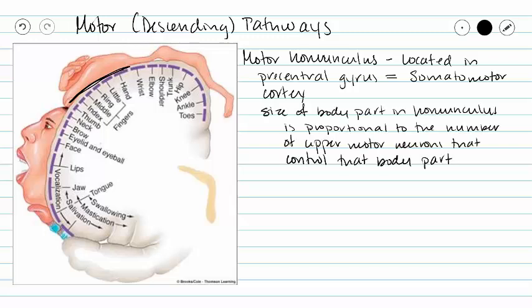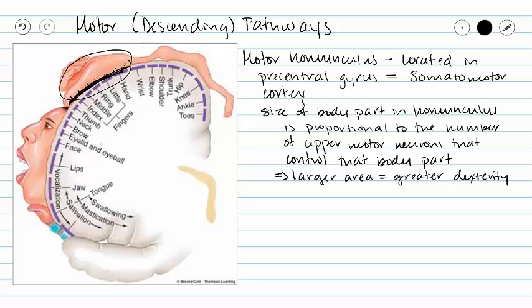We see a ton of area dedicated to the hand and fingers, meaning we have tons of upper motor neurons in this area that control our hand. The larger the area, the more dexterity in motion you possess. So we have a lot of dexterity in our hand, but we don't have a lot of dexterity in our trunk.